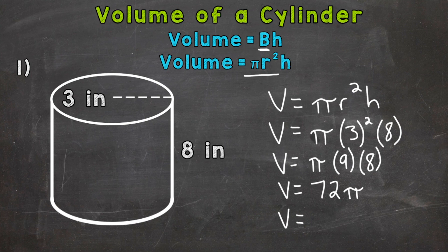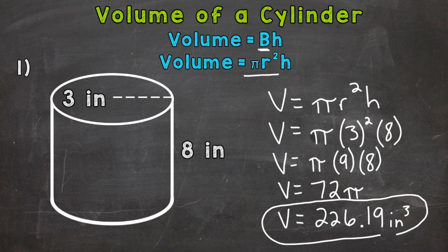So once I punch that in, I get a pretty long decimal there. So I'm going to round it to the hundredths place. Again, I'm rounding my answer to the hundredths place. And I get 226 and 19 hundredths. And this is volume, so we use cubic inches. Or, I'm sorry, cubic, whatever the unit of measure is. And in this case, we were working with inches, so cubic inches. So volume equals 226 and 19 hundredths cubic inches.